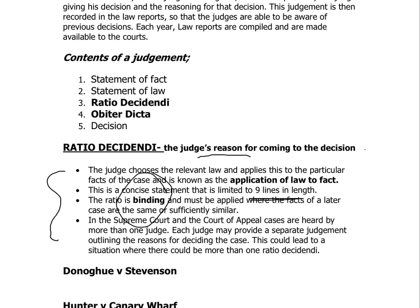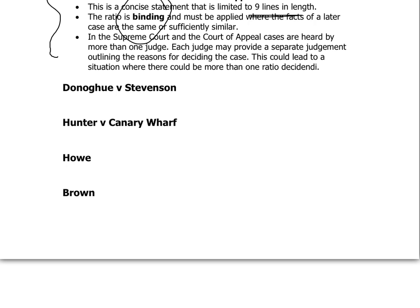If you just have the definition and features, you are massively limiting yourself — generally you're looking at maybe four marks out of 15. The key thing is to get the cases. The cases aren't there to waffle on about; they are there to show what you've just explained. You don't need to go on about facts — you need to tell me the reason for the decision, i.e., what the ratio was. Facts get you nowhere; I need to know what the ratio is.